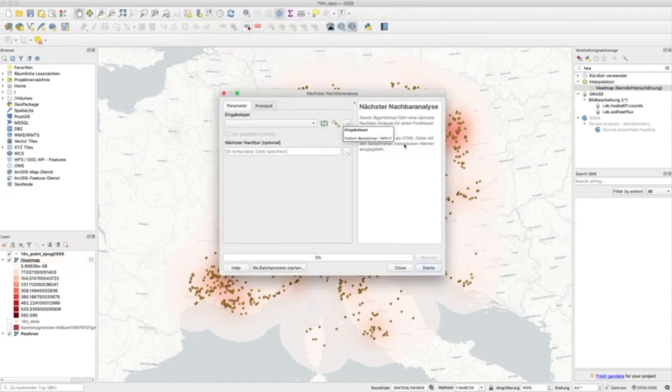Now the dialog here is very simple. We just have to select the input layer. We use our projected points here and we are asked if we want to store that in a temporary file or not. Actually, you will see this file is in the end not a shapefile as we are used to, but it will be an HTML file. We can just leave it like that because we probably don't need to store the result for a very long time. I just click on run.